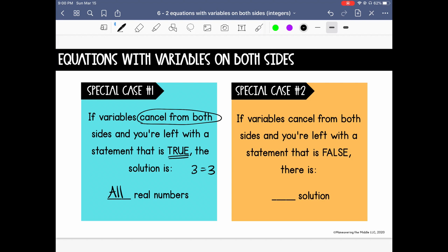Now if instead your variables cancel from both sides but you're left with a statement that is false, so if it said 3 equals negative 3, which is false, then that means that there is actually no solution. There's no value for the variable that would make the equation true.